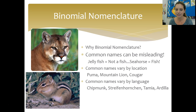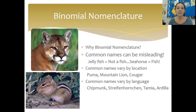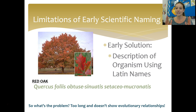Common names also vary by language. A chipmunk might be called a Streifenhörnchen, a tamia, or an ardea in other parts of the world — but they're all talking about the same animal. So we need a system where, no matter where you are in the world, everyone knows what you're talking about. That was Carolus Linnaeus' goal with binomial nomenclature. His first solution was to give a description of the organism using Latin, the language of science.